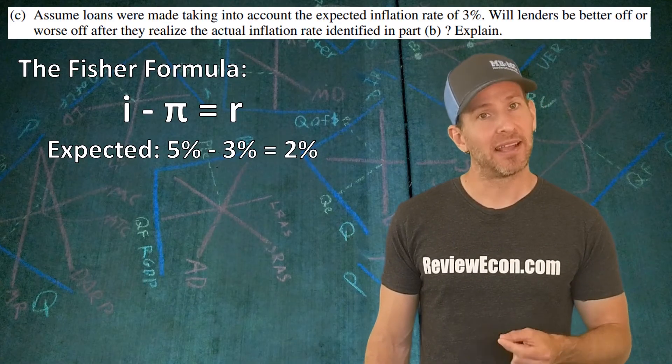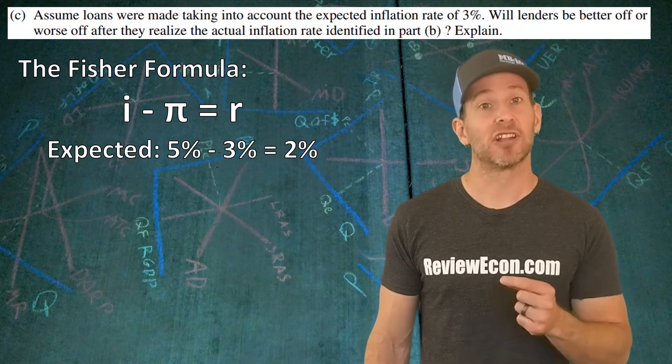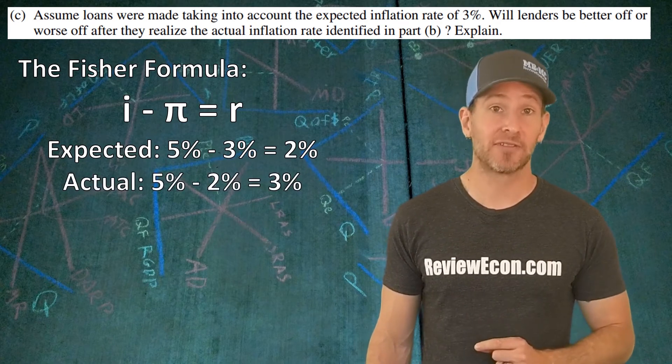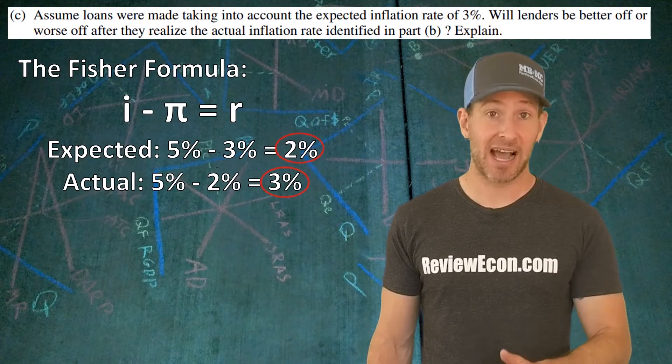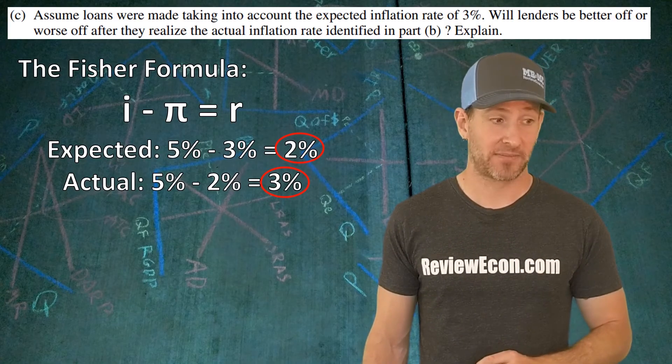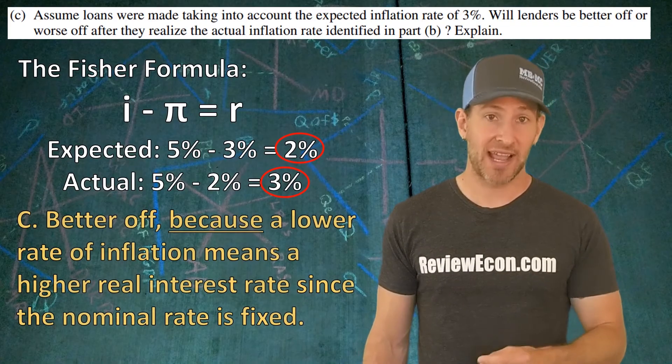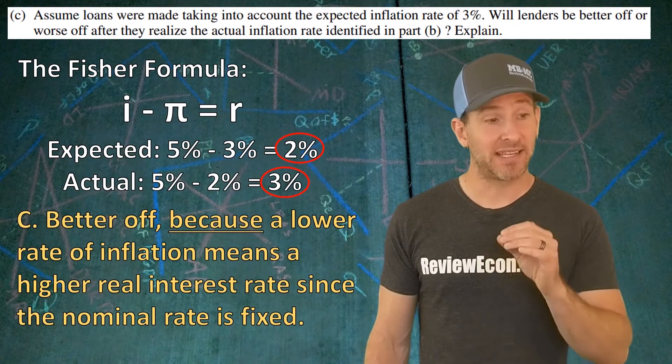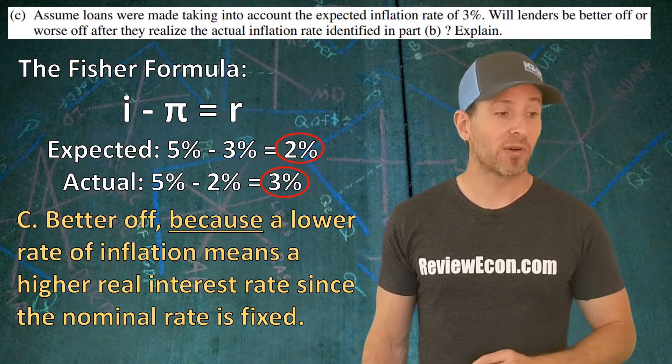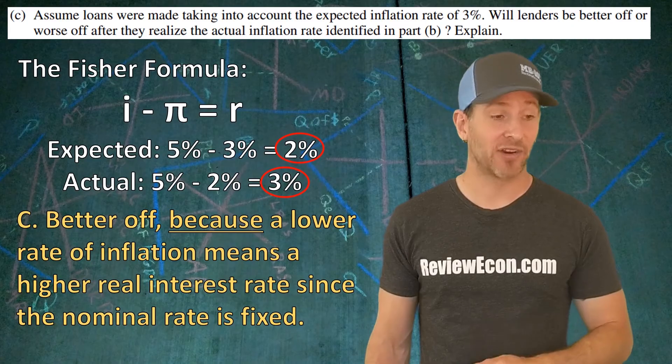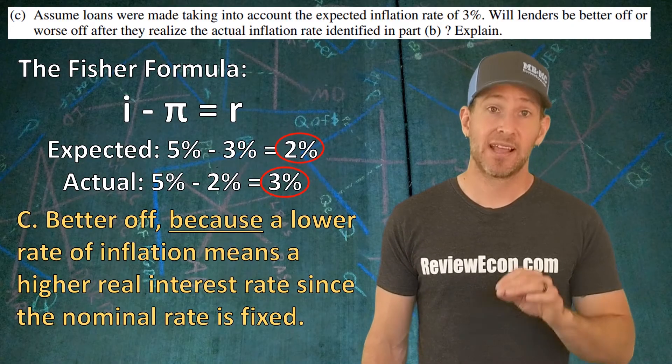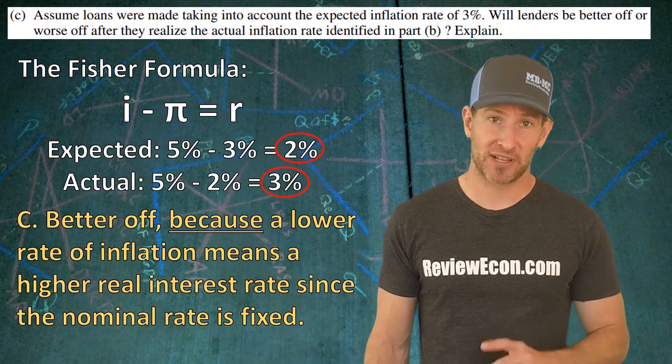But if that inflation rate is lower than expected, let's say 2%, then the real rate of return will actually be higher, a 3% real interest rate. In order to answer this question, you say better off because that's the explain point here. The lower rate of inflation means a higher real interest rate since the nominal rate is fixed. Explain using that Fisher formula and you'll get your point.